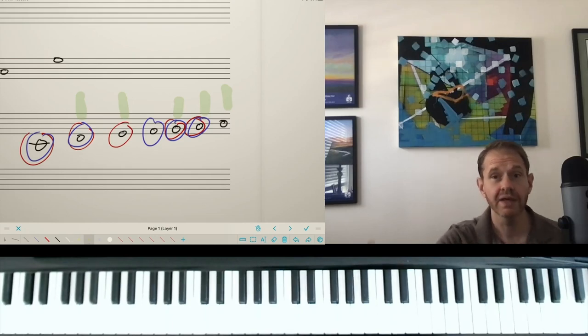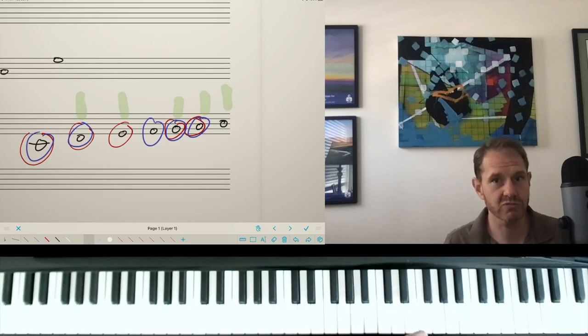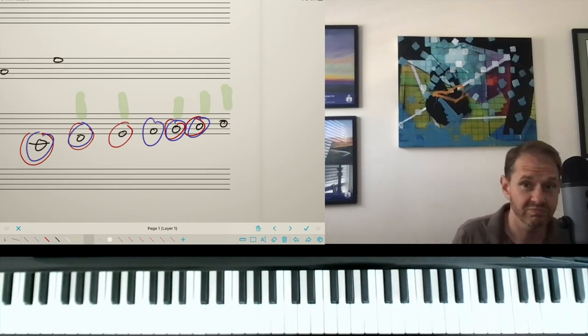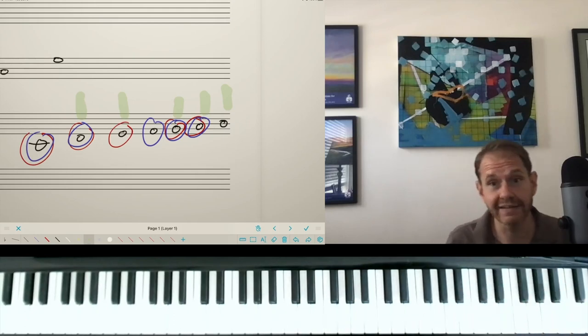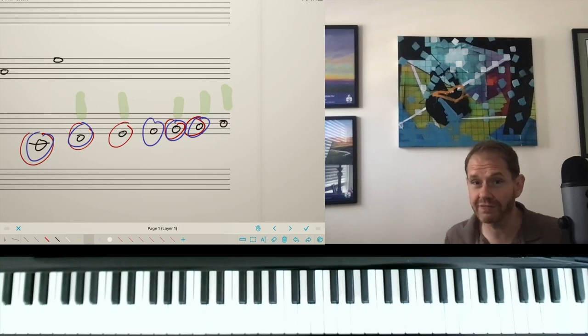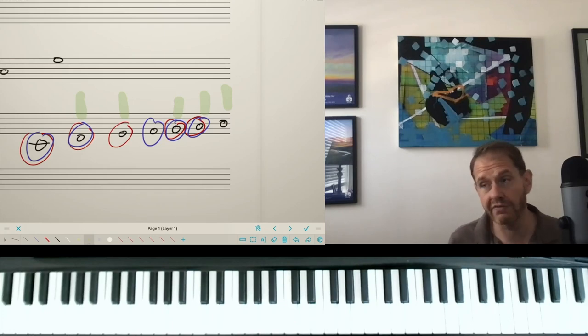Let me say that a different way. If you can find the parent scale, the major scale upon which the mode is based. So, for instance, for G mixolydian, the parent scale would be C major. For B flat Lydian, the parent scale would be F major. It's going to be the one, four, and five of that original parent scale that are going to work. So this is great because it means that for basically anything where you have a major mode, you can use pentatonic voicings. Pretty cool.